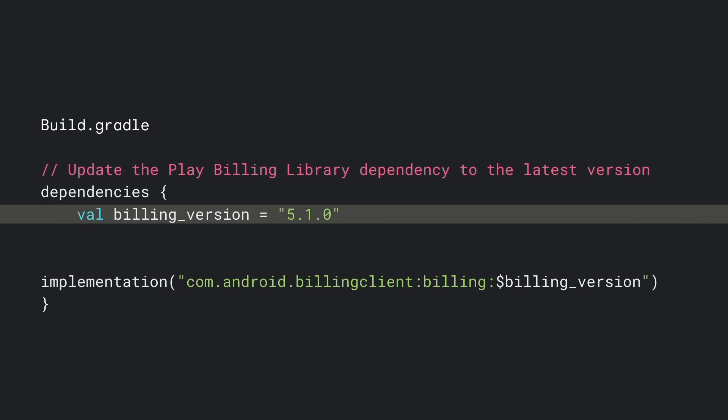If you started your migration from Play Billing Library 4, your app will probably build right away. If you started with version 3, some methods may have been deprecated since then. To check what methods were deprecated in each version, you can look at the Release Notes page.